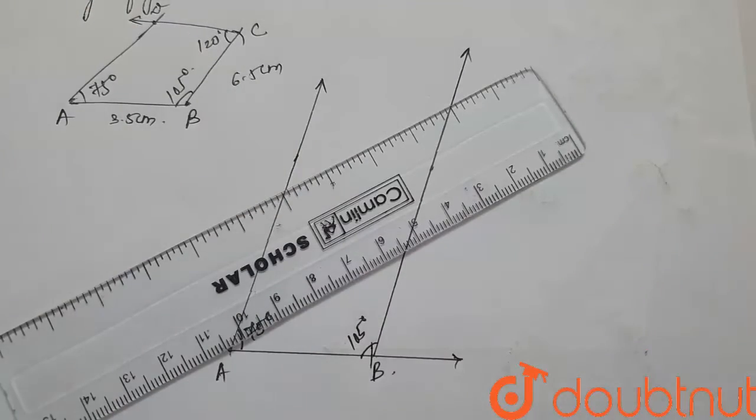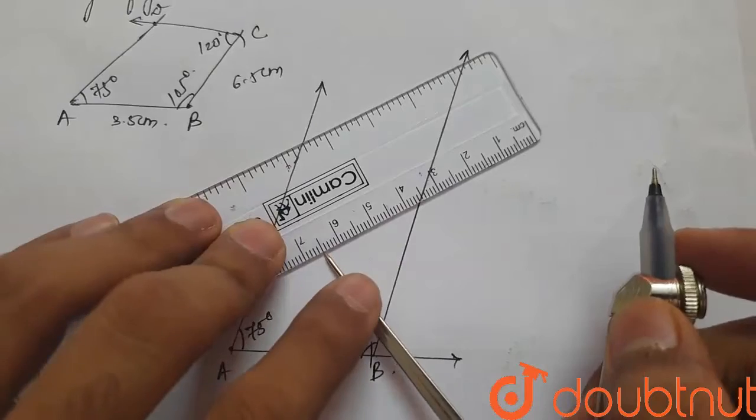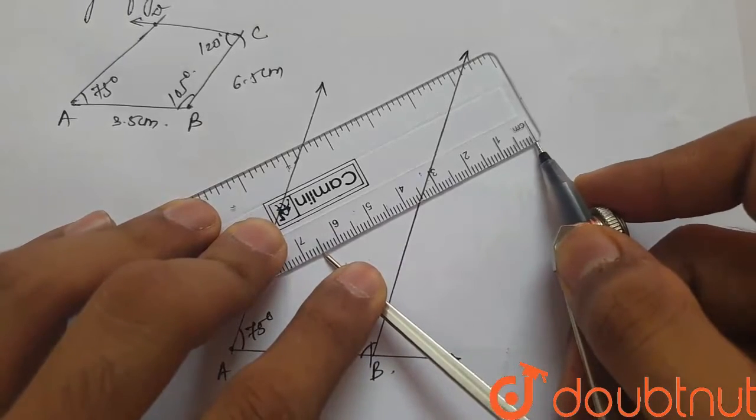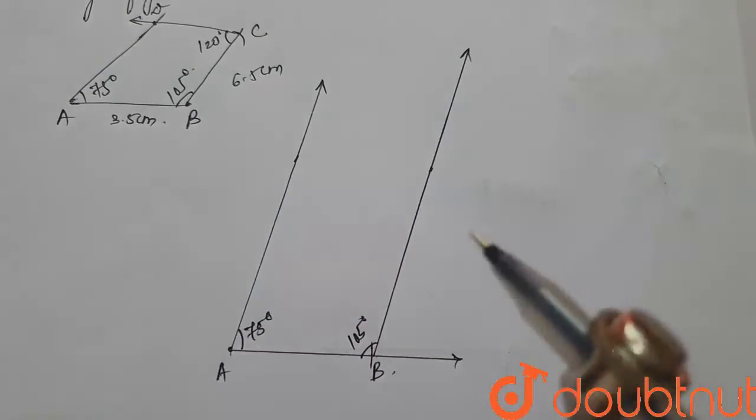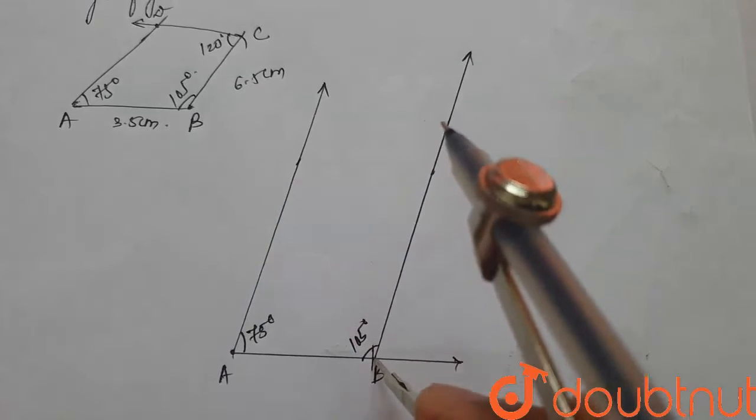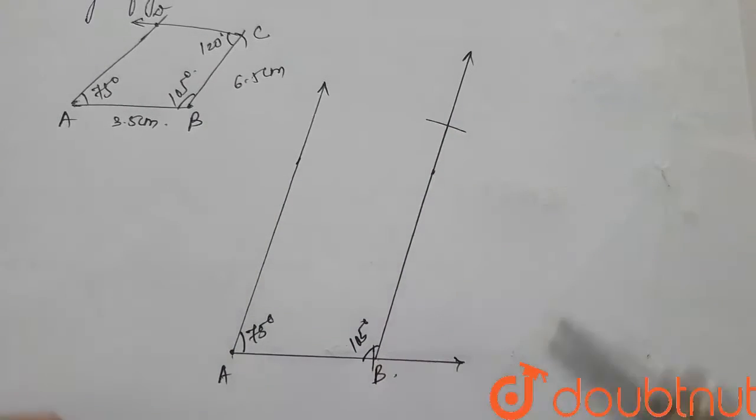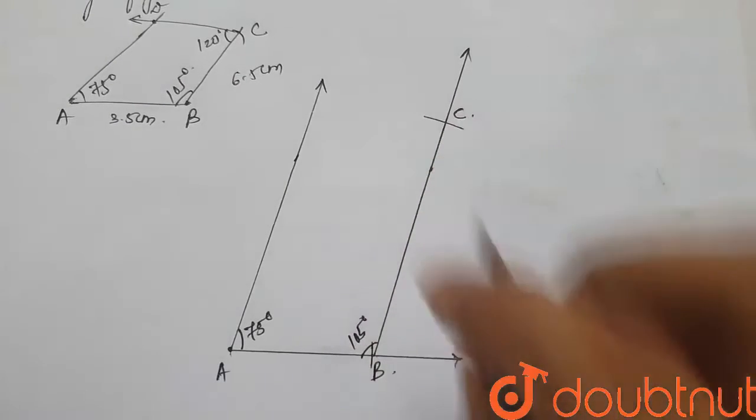Then, we'll take a 6.5 cm distance on the compass and mark it by keeping the compass on B and make an arc on this 105 degree line. This is our point C.